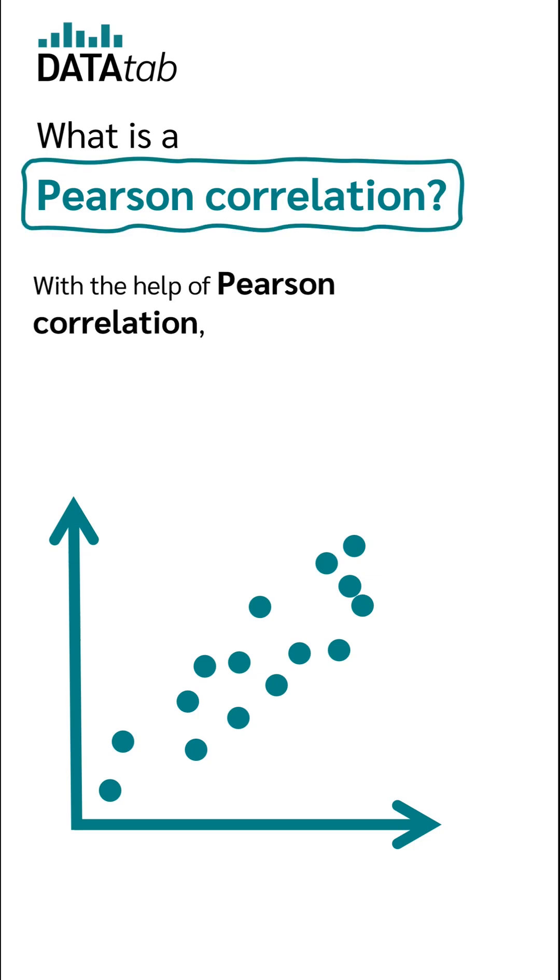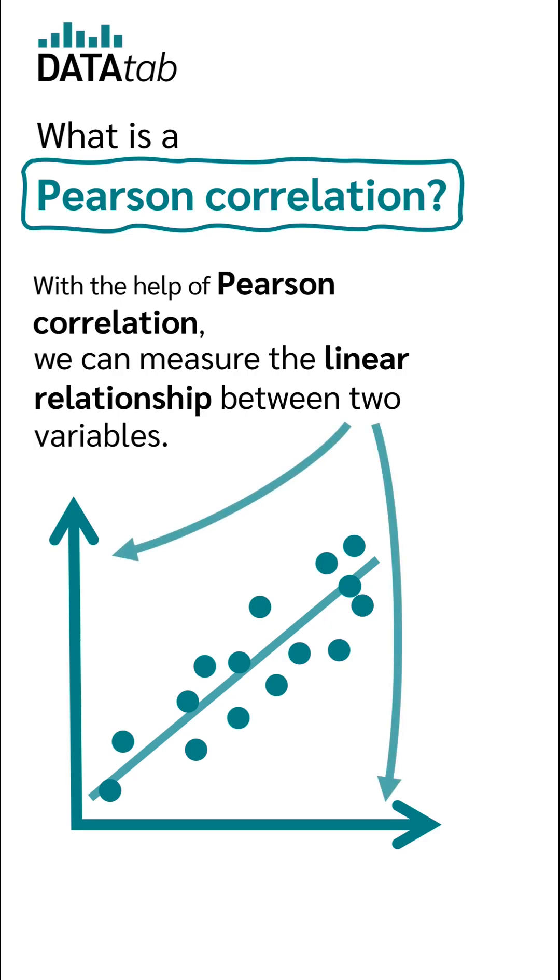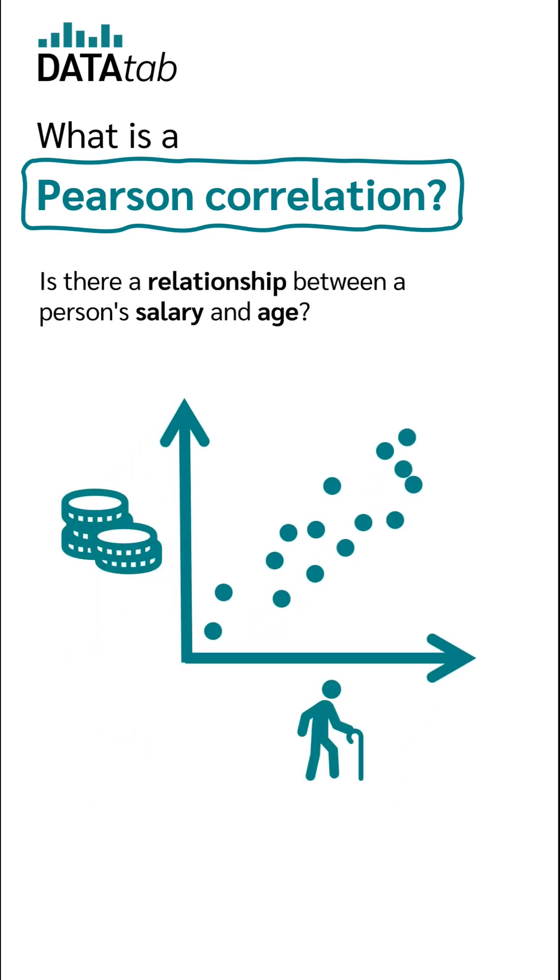What is a Pearson correlation? With the help of Pearson correlation, we can measure the linear relationship between two variables. For example, is there a relationship between a person's salary and age?